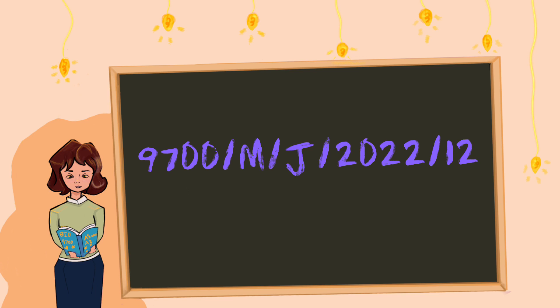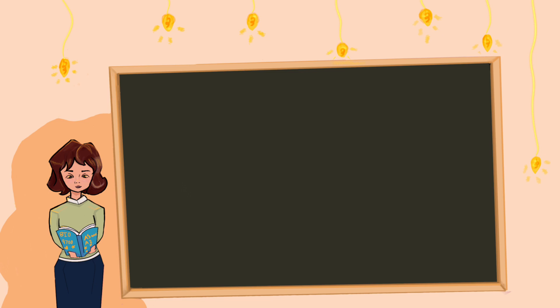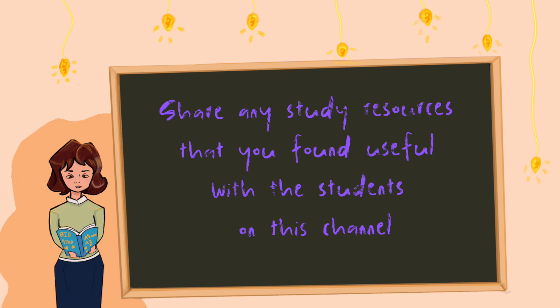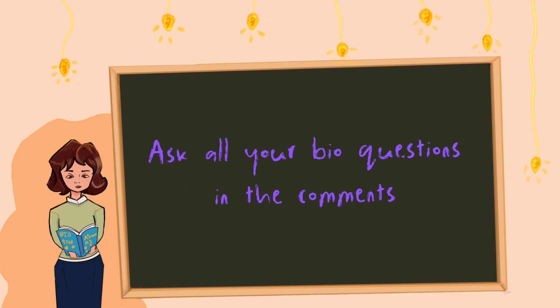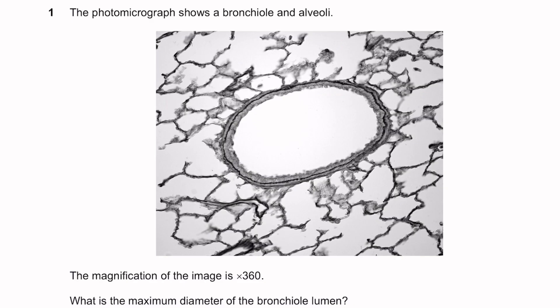Hello everyone and welcome. In this video we'll be checking out 9700 variant 2 of May/June 2022. This is the walkthrough of Paper 1, the MCQ. Before we get started, please make sure to share any resources that you've been studying with and found useful — they'll also be useful to other students on this channel. If you have any general questions in biology, whether in AS or A2, please leave them in the comments and I can help. Now let's get started.